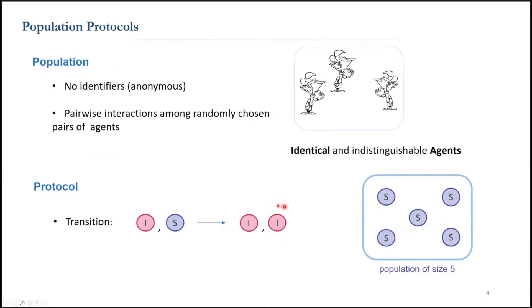If we run the protocol on this example, nothing happens, because in this configuration there is no agent in state i. But if you start in a configuration with at least one agent in state i, the population can apply the rule. Not all the interactions are going to change the state of the agents.